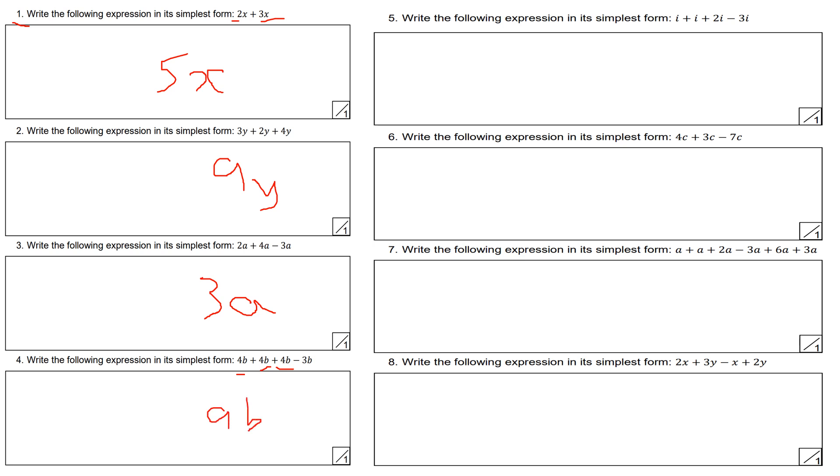Question number 5, write the following expression in simplest form: i plus i plus 2i minus 3i. That'll be 2i plus 2i, which is 4i, minus 3i gives 1i or just i. You can write it as 1i or just i by itself. In algebra, when it's one lot of something, you write it as that letter by itself.